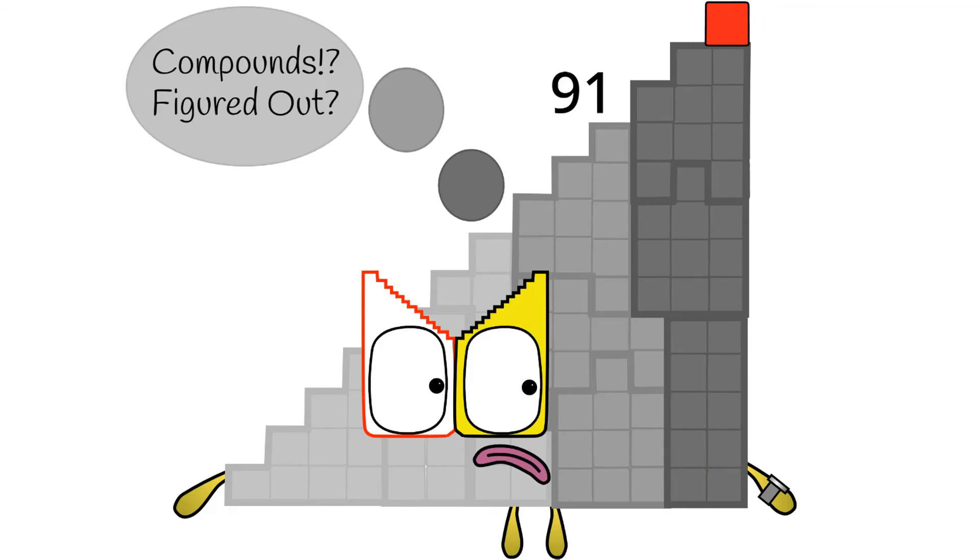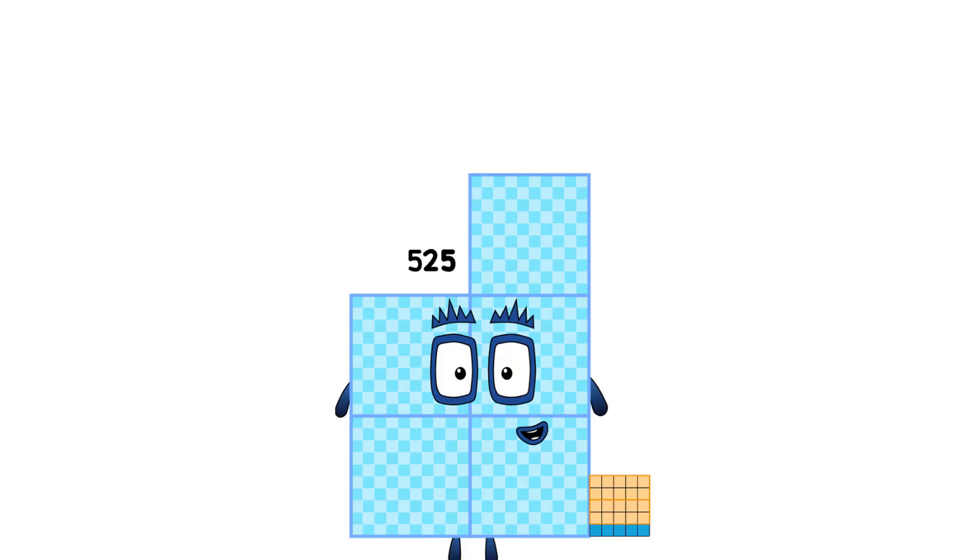15 times 35 equals 525. I am 525. I am a very happy Numberblock. Unfortunately, if you're a Numberblock, it is hard to make shapes like us. I'm too tall for the camera because I am 500s, 2 tens, and 5 ones. 35 is 3 tens and 5 ones.